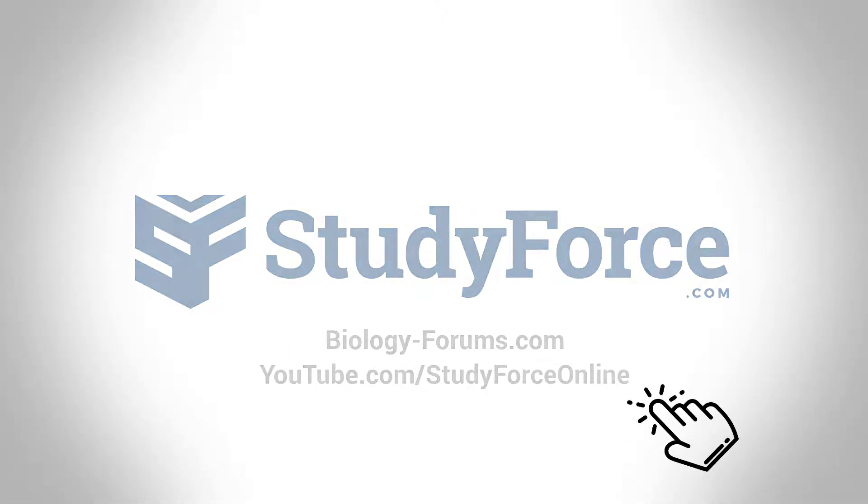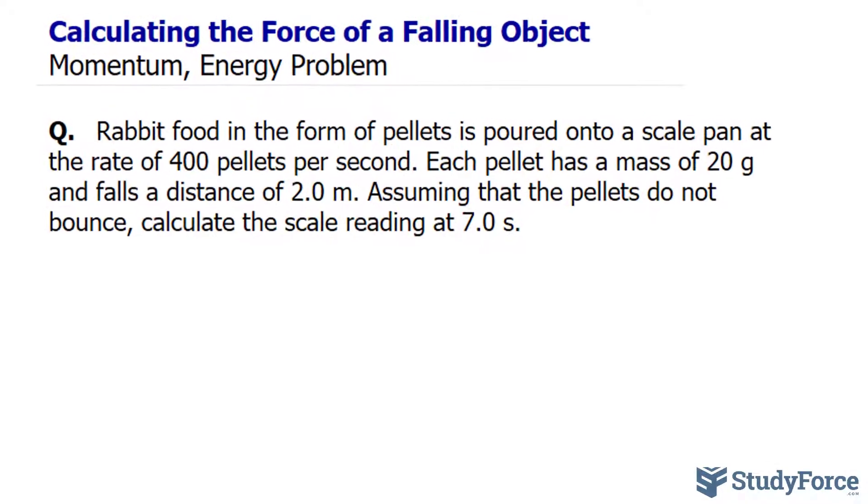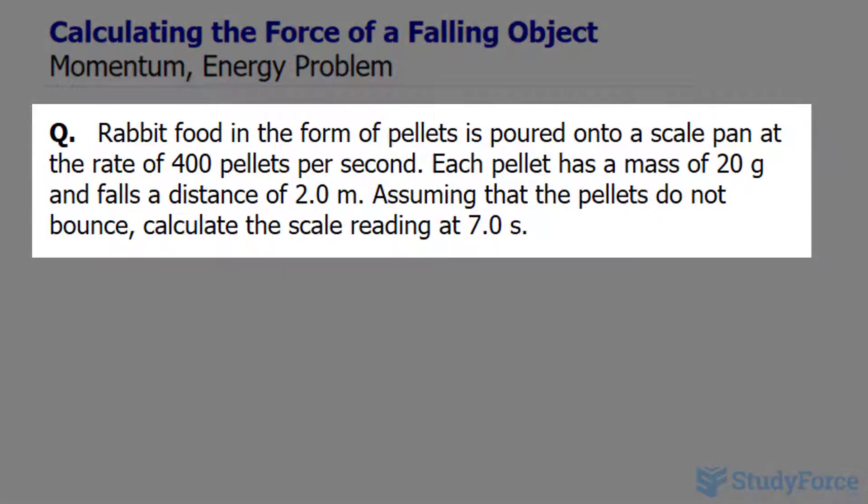In this lesson, I'll show you how to calculate the force of a falling object. This is a momentum energy problem. The question reads: rabbit food in the form of pellets is poured onto a scale pan at the rate of 400 pellets per second.